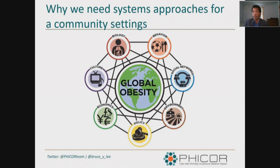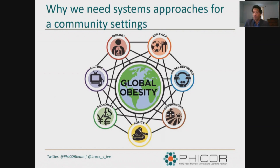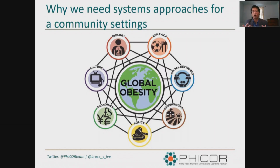As a reminder, obesity is a problem that's a systems problem — it's not just an individual problem. It's really the result of multiple different complex systems like biological processes interacting with behavior, social networks, the environment, policy, economics, culture, and a variety of other systems. To address obesity at a community level, we have to really focus on the different complex systems involved. Unaided, it's difficult to untangle and address these systems, so you really have to use systems approaches such as systems modeling.